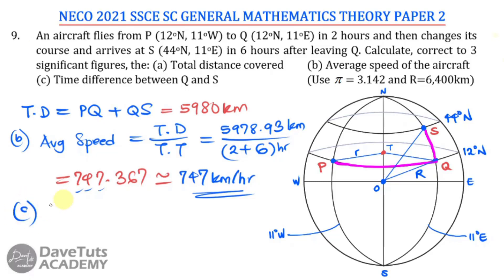For part C, we are asked for the time difference between Q and S. Looking at the coordinates, Q and S lie on the same longitude — 11° East. Locations on the same longitude share the same time zone, so there is no time difference between Q and S. This is similar to Lagos and London sharing the same longitude axis and therefore the same time zone.